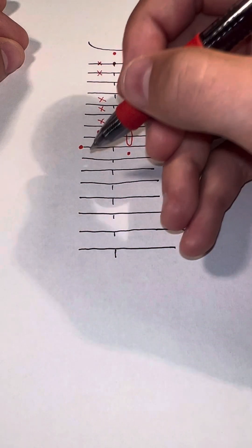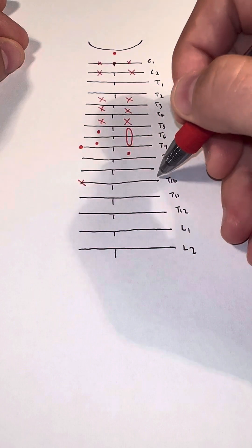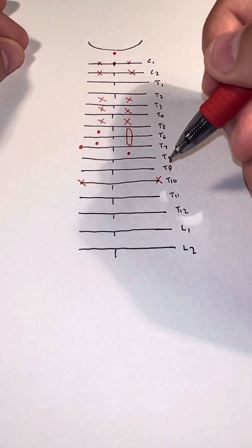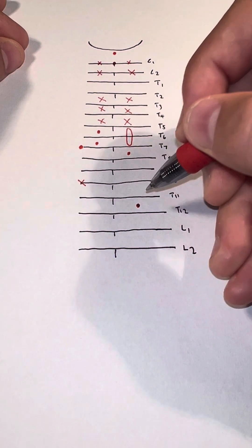Next, T10, here and here, between T11 and T12, a dot.